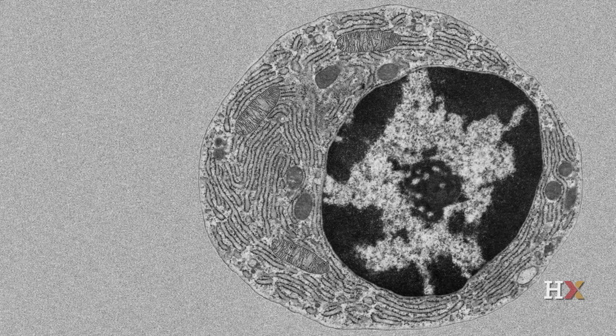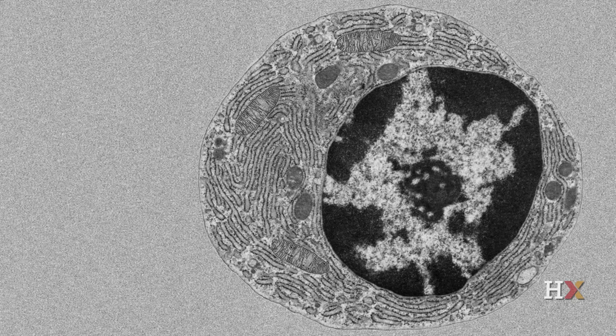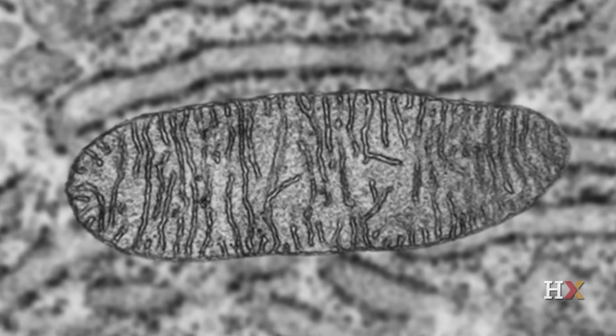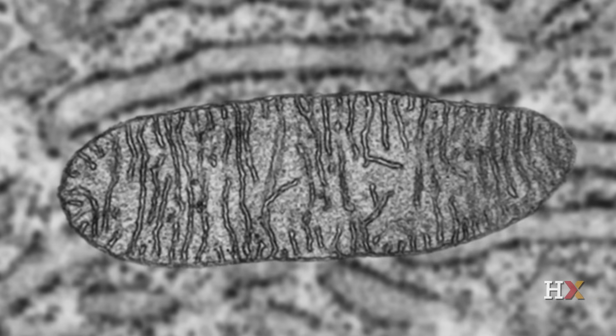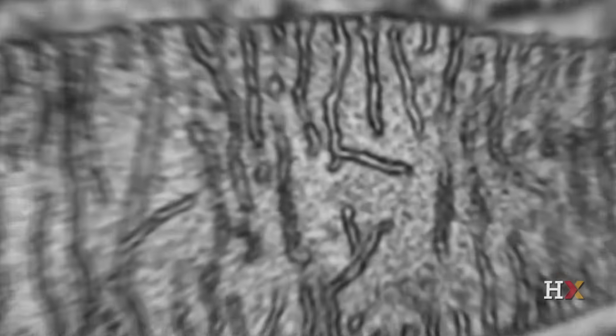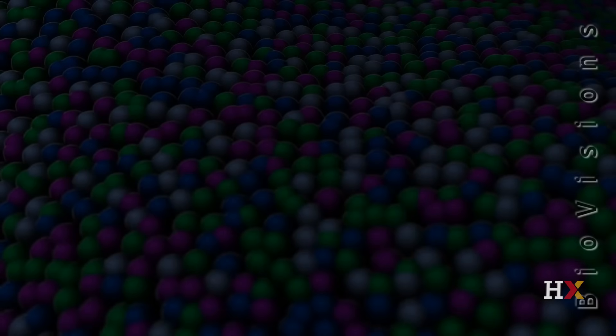All eukaryotic cells from yeast to those that make up the human body contain membrane-bound organelles with specialized functions. Mitochondria are double-membraned organelles that harness most of the energy that cells need to grow and reproduce. Nearly all of this energy comes from reactions that take place at the inner mitochondrial membrane.